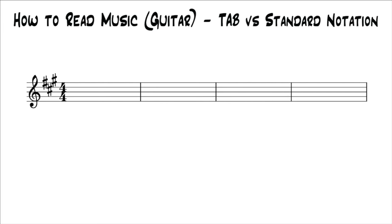Tab is easier to learn than standard notation, but for the most part you pretty much have to know what you're trying to play sounds like — it doesn't fill in all the gaps that standard notation does. With standard notation, if you're really good at reading it, you'll be able to play a piece like it's supposed to sound. You can't really do that with tab. You kind of have to use it in combination with actually listening to whatever it is you're trying to learn, because tab is mostly telling you where to put your fingers on the fretboard.